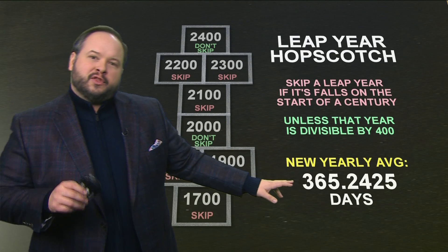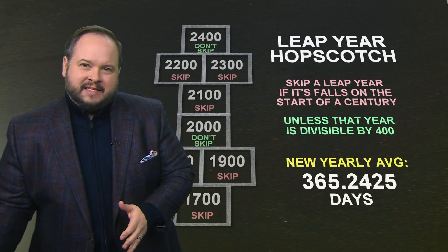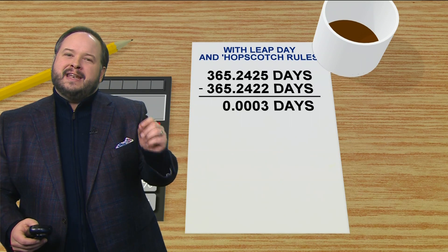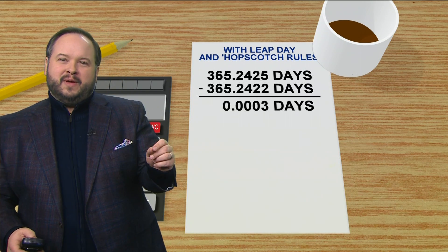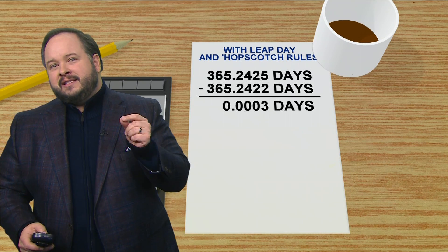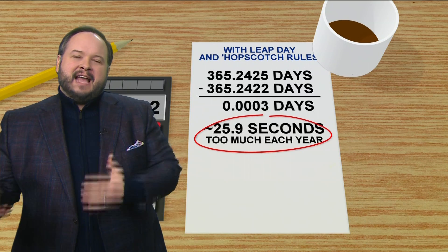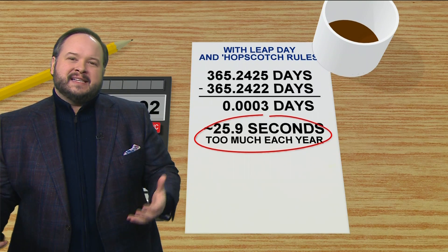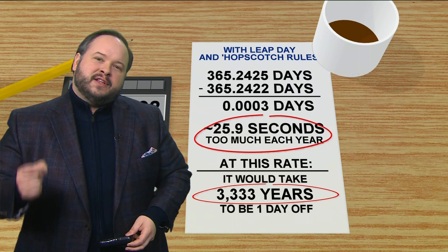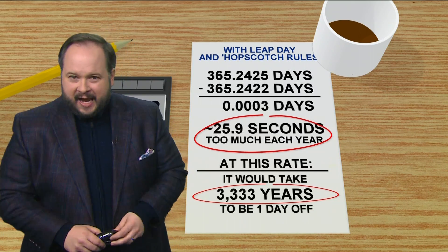That gets our yearly average to 365.2425 days, which is close — not exactly bang on to that number that we need — but close enough to live with. It's 3 ten-thousandths of a day, which means we're talking seconds, not minutes: it's 26 seconds too much each year. But at that rate, it would take 3,333 years to have the calendar be off by one day.